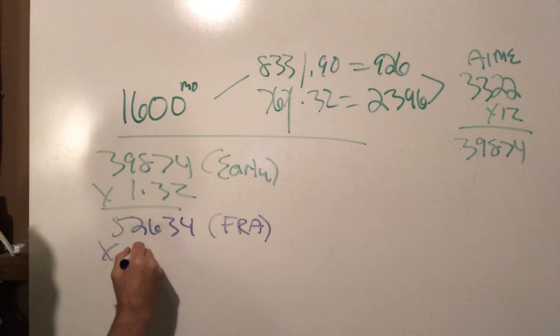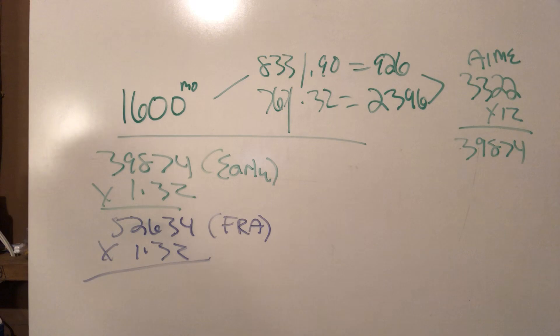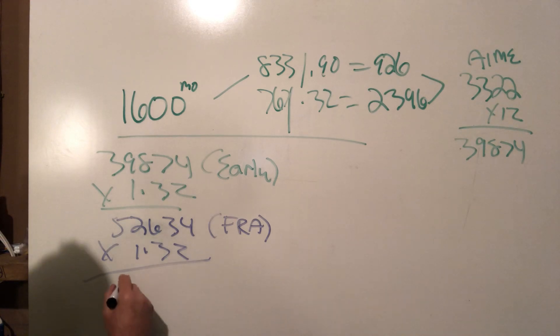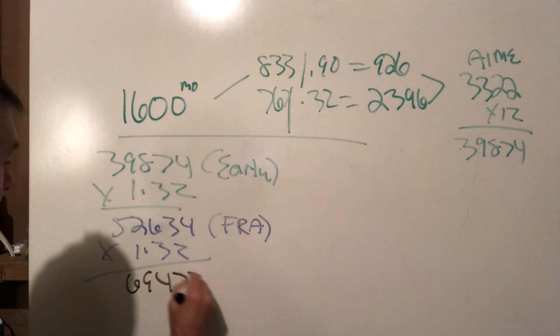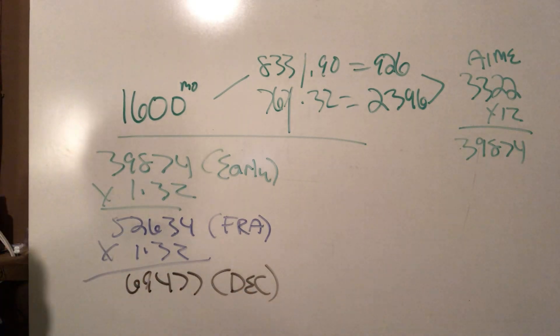Times 1.32 if he would have taken full retirement age gives us $52,634. Now we're going to times that by 1.32 to see what it would have been if he would have waited until his delayed earnings credits. Now again, he did say only people who waited until 70 get the $2,500 a month. Well, let's just take a look. Times 1.32 is 69,477. That's delayed earnings credits.